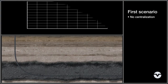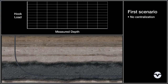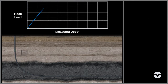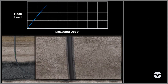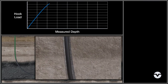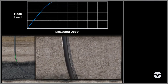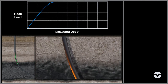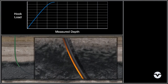The first scenario shows the challenges encountered when running a casing string without the use of centralizers. Initially, the string is in tension in the vertical section of the well. The tensile hook load builds as the string is extended further down the vertical section, experiencing very little resistance. As the string enters the build section, it begins to interact with the wellbore, creating resistance against the string's progression into the well. This resistance to motion is more commonly known as drag.